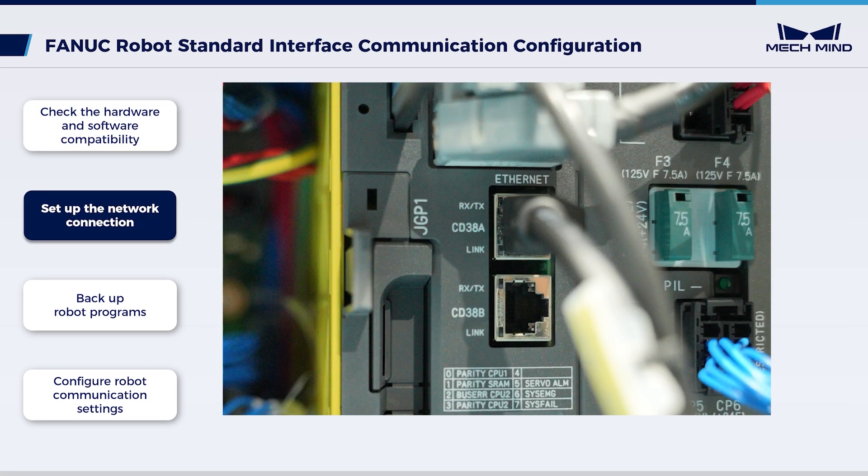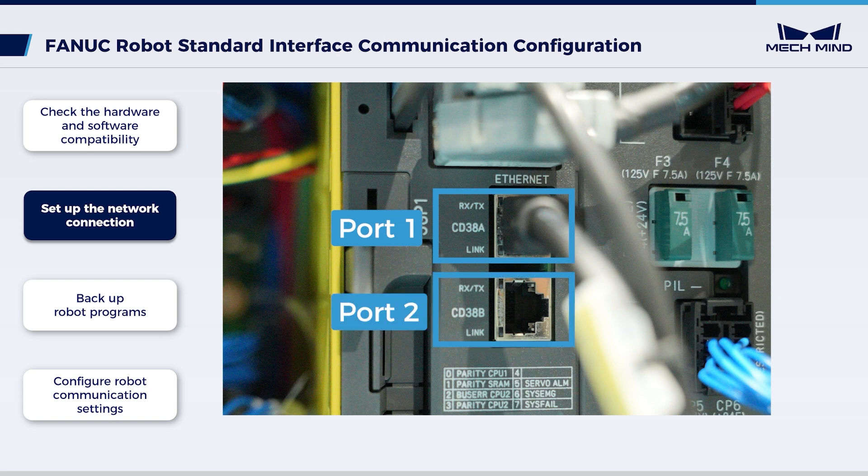Next, check the hardware connections. Make sure that you have plugged the Ethernet cable of the IPC into the Ethernet port of the robot controller. You can plug the cable into either CD38A port or CD38B port. CD38A corresponds to port 1 in the robot IP setting, while CD38B corresponds to port 2.